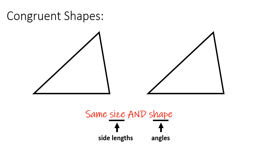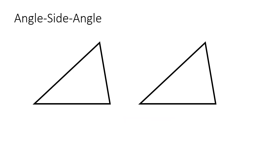If we don't have all of the side lengths — for instance, in these triangles — then we have to rely on a combination of both angles and side lengths. That brings us to the two methods we're going to be talking about today: the angle-side-angle method and the angle-angle-side method. In both of these, we have two pairs of corresponding angles that we know are congruent, and one pair of corresponding sides that we know are congruent. It's just a matter of where those are located.